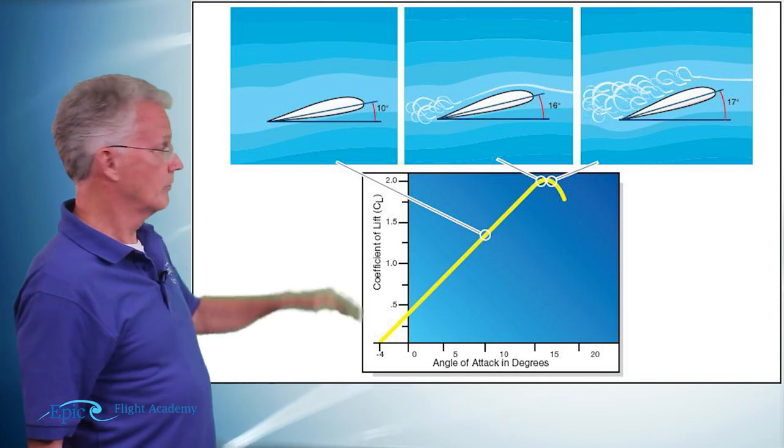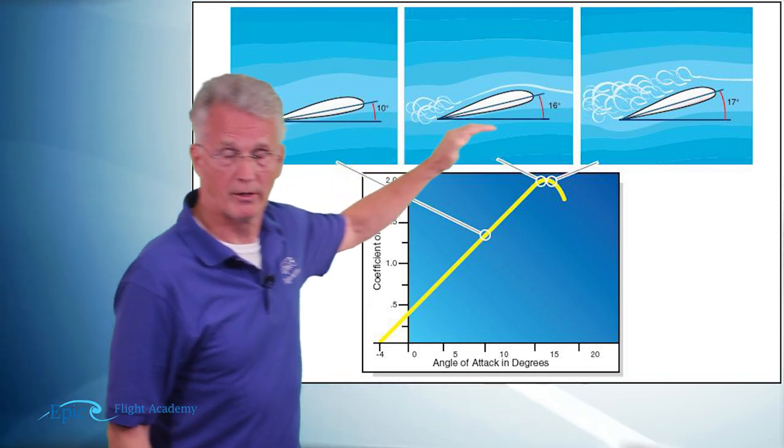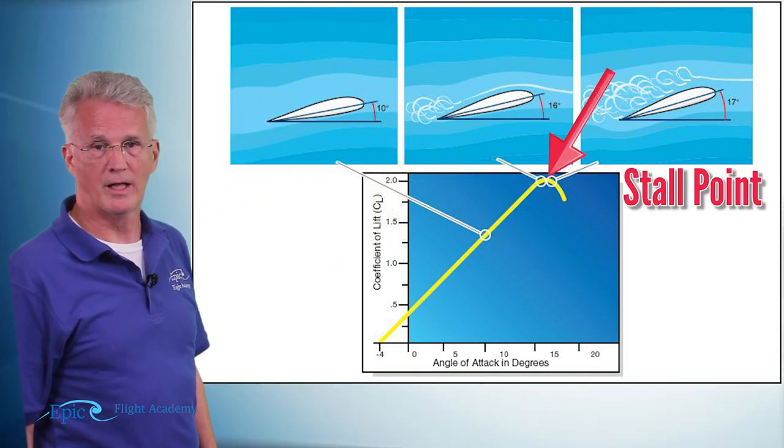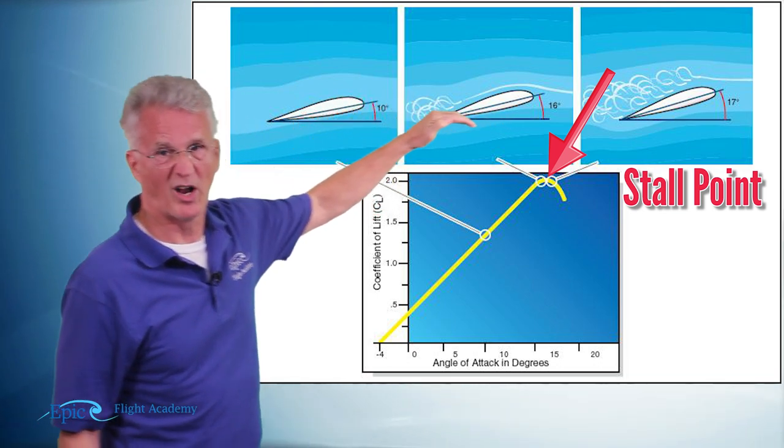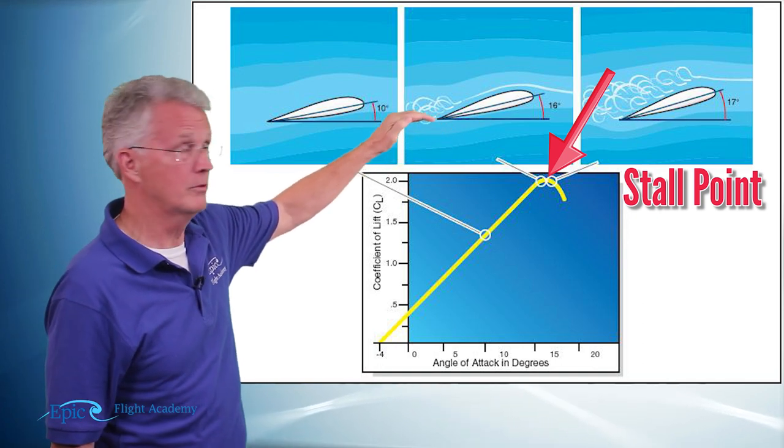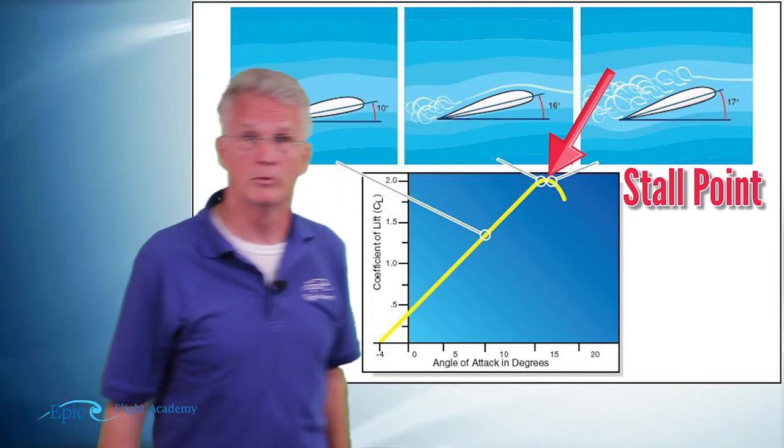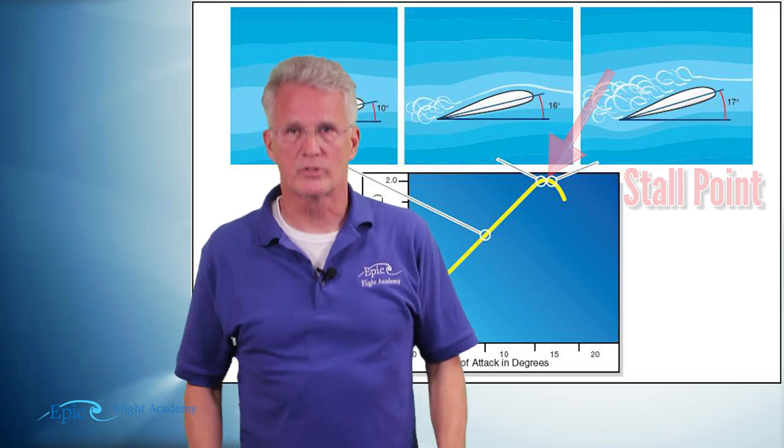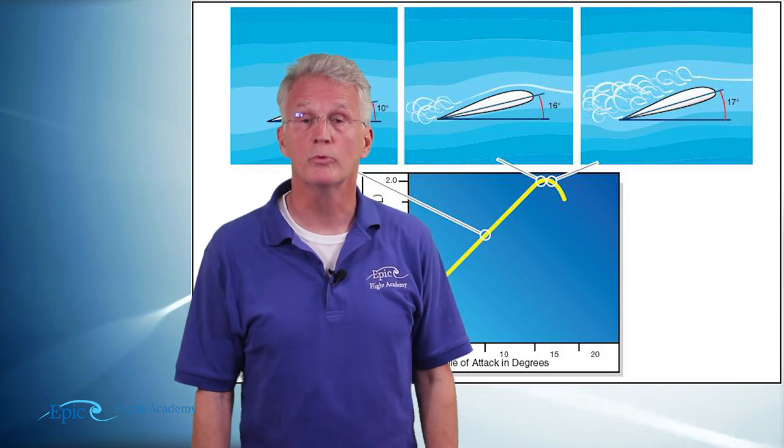Now notice when we get to the top where that yellow line starts this curve, that's the stall point. And if you take a look at the top of that yellow curve, we are at approximately 16 degrees angle of attack. And as we continue to increase it, look what happens to that yellow curve. It starts its downward movement. That is where the airflow has separated from the top of the airfoil. It can no longer flow smoothly.